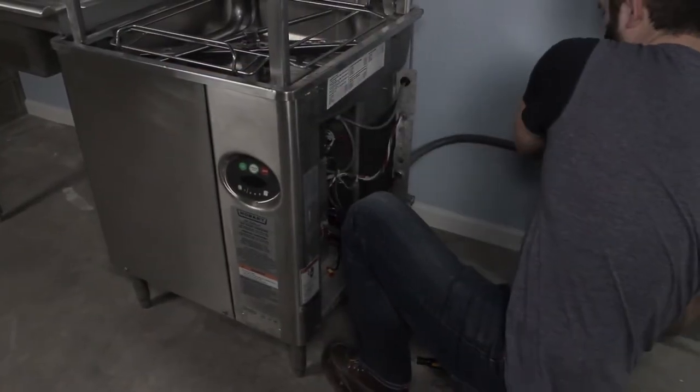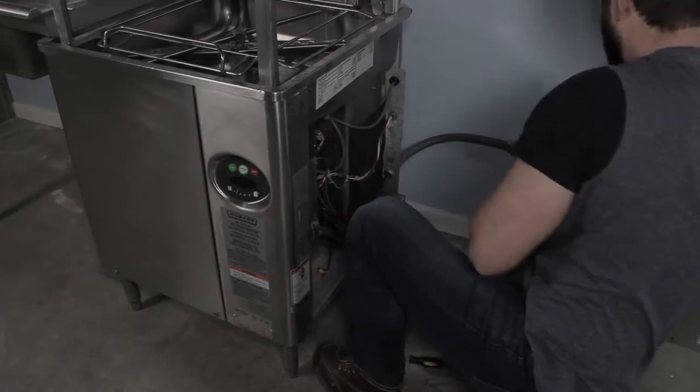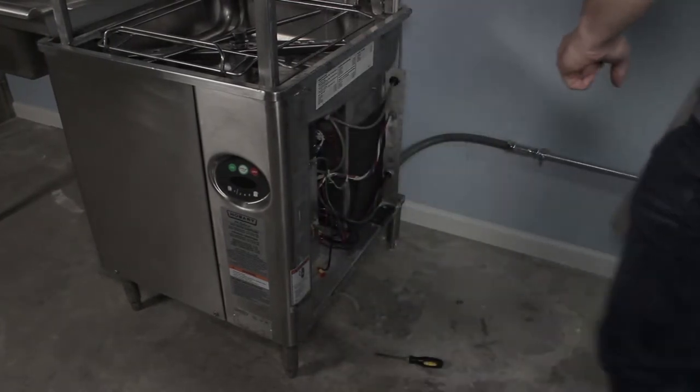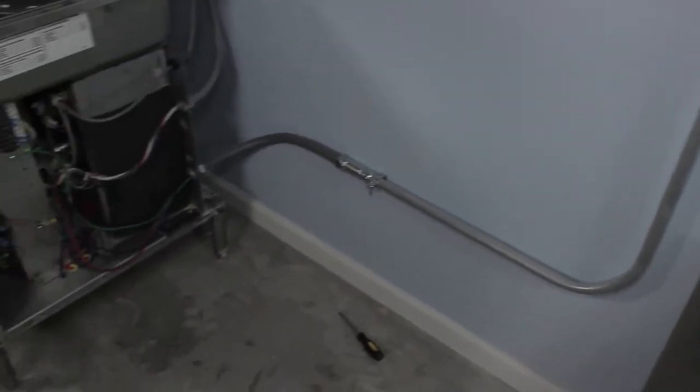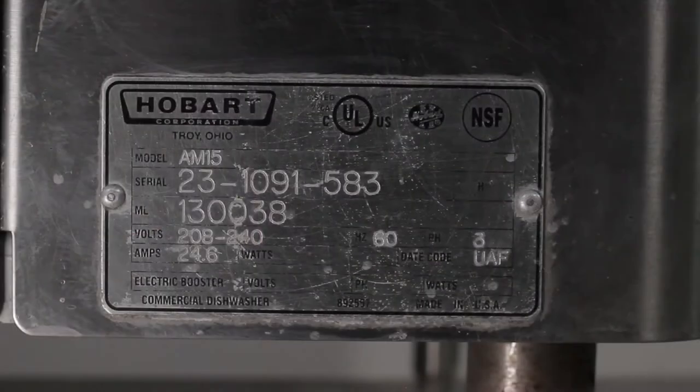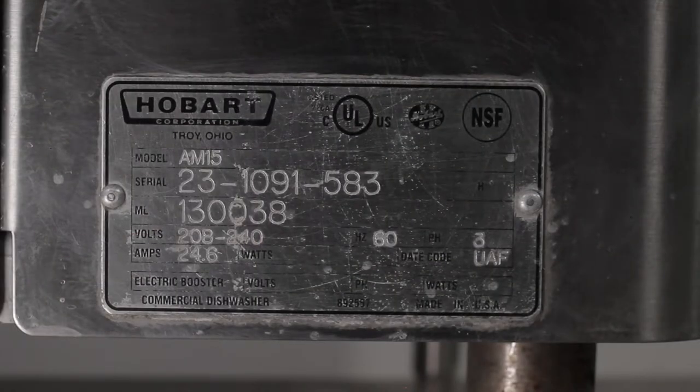The next step is to connect the electrical power to the dishwasher. It's always a good idea to consult a professional electrician when dealing with electrical components. Ensure the building electrical service matches your dishwasher machine, and in this case, it requires 240 volts, three phase.